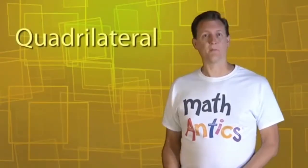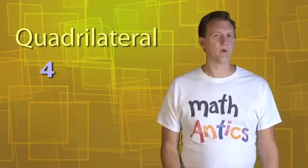Hi, welcome to Math Antics! In this video, we're going to learn about special kinds of polygons called quadrilaterals. Quadrilateral is just a fancy math word for a polygon that has exactly four sides and four angles, like this one.